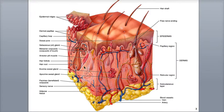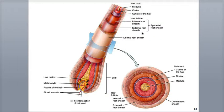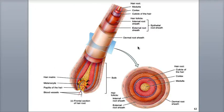The hair follicle surrounds the root and consists of an external and internal root sheath, which collectively is called the epithelial root sheath. The external root sheath is the lower extension of the epidermis. The internal root sheath is made by the hair matrix, which is a layer of dividing cells that originates from the stratum basale, and forms a tube of epithelial cells between the hair and external root sheath. Surrounding the hair follicle is a dense region of dermis called the dermal root sheath.